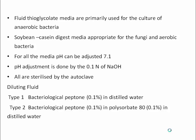For all the media, the pH is maintained at 7.1. If the pH is low, it can be adjusted using 0.1 N NaOH, and all these media can be sterilized accordingly. There are two types of diluting fluids used: Type 1 is bacterial peptone in distilled water, and Type 2 is bacterial peptone 0.1% in polysorbate mixed in distilled water.